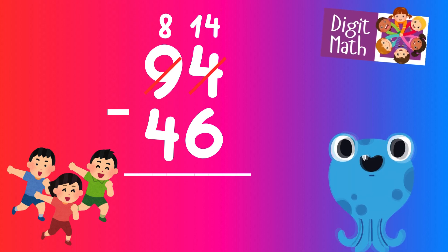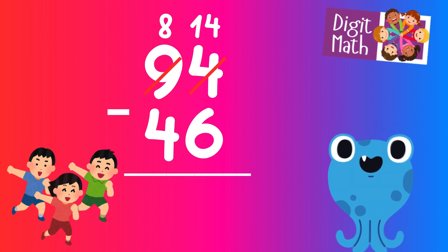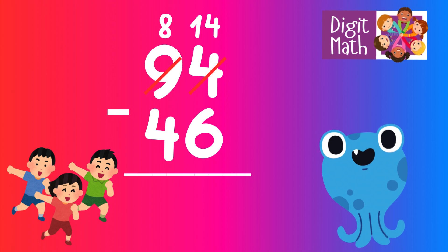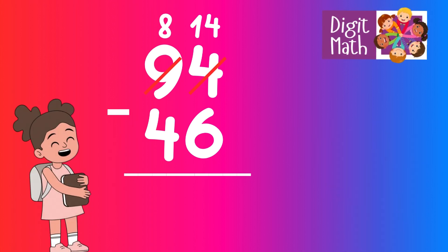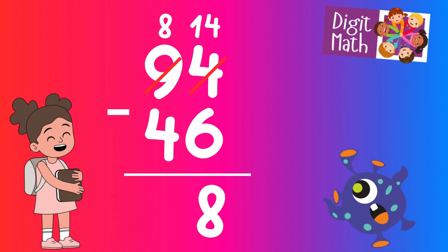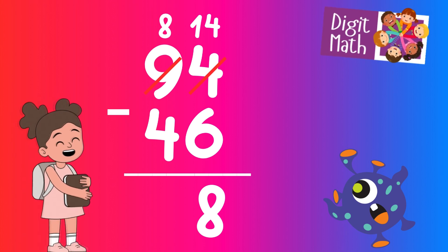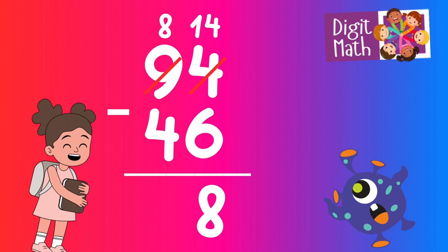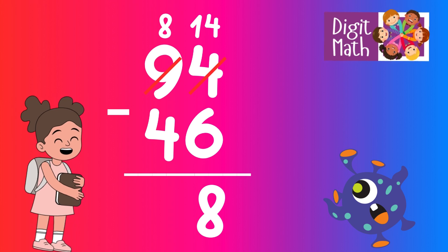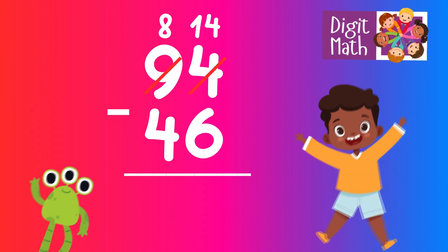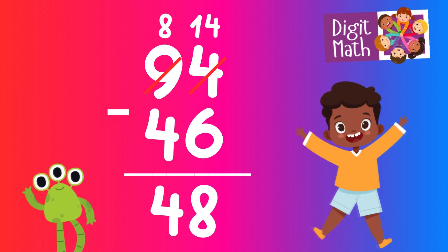Now we have 14 in the Units column. Subtract 6 from 14. In the Tens column, we now have 8. Subtract 4 from 8, which equals 4. So the final result is: 94 minus 46 equals 48.